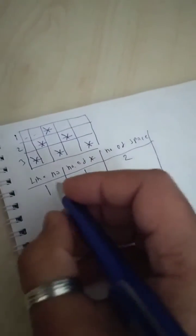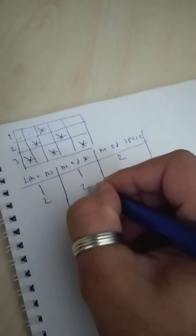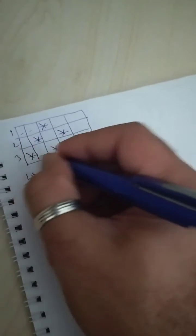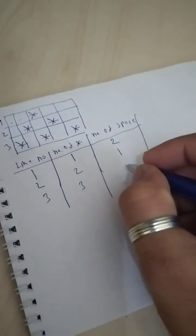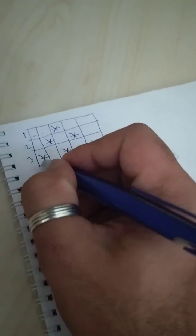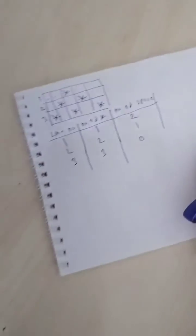In line number two, two stars are there and on the left side there is only one space. In line number three, there are three stars and the space is zero, because we can see the star is printed directly on the first position. So we need to create the following pattern.